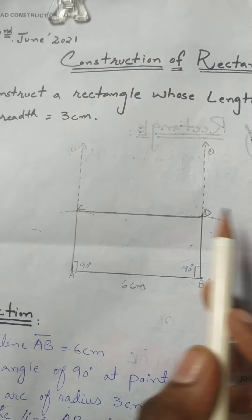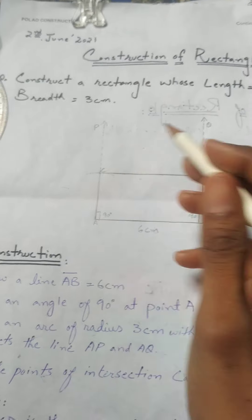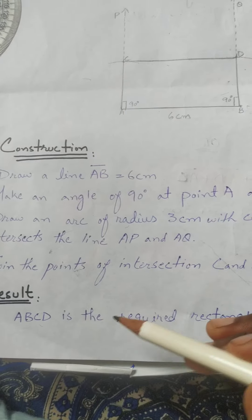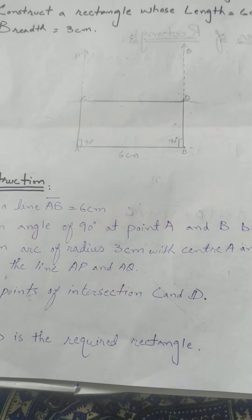We will get the shape of a rectangle. A, B, C, and D is the required rectangle.